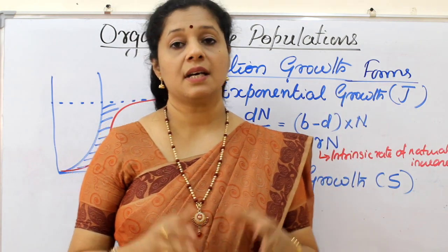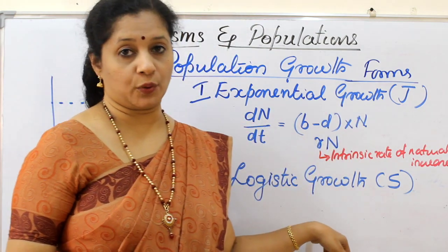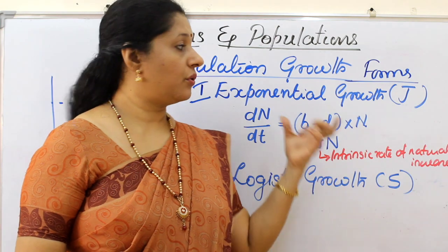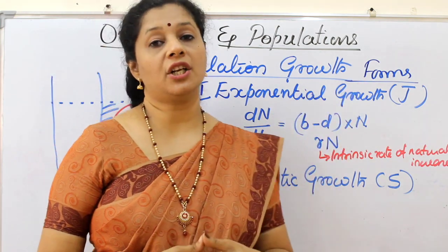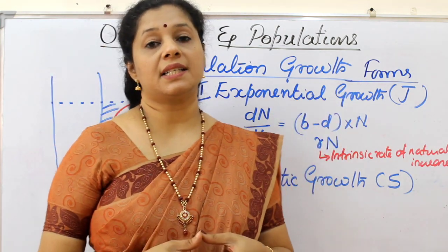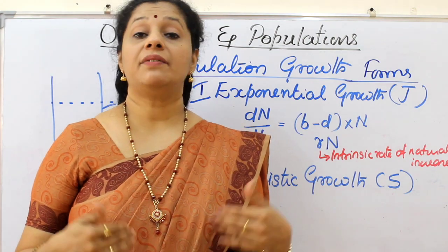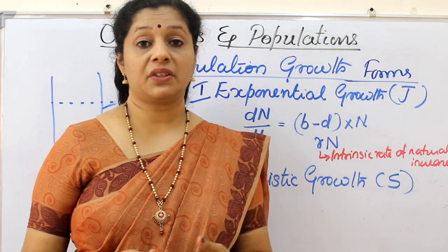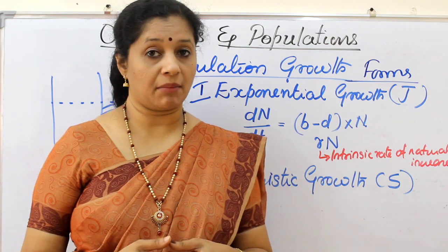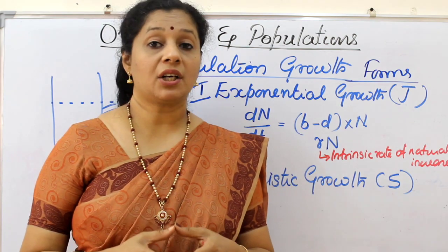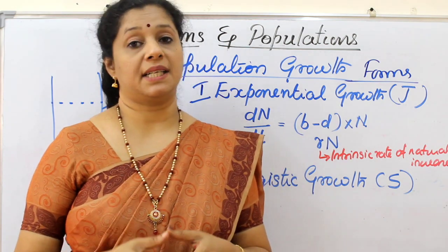The more realistic type is logistic growth. In exponential growth, we consider the birth rate and death rate — not the total number, but the per capita birth and per capita death. Per capita means per head: what is the number per individual.